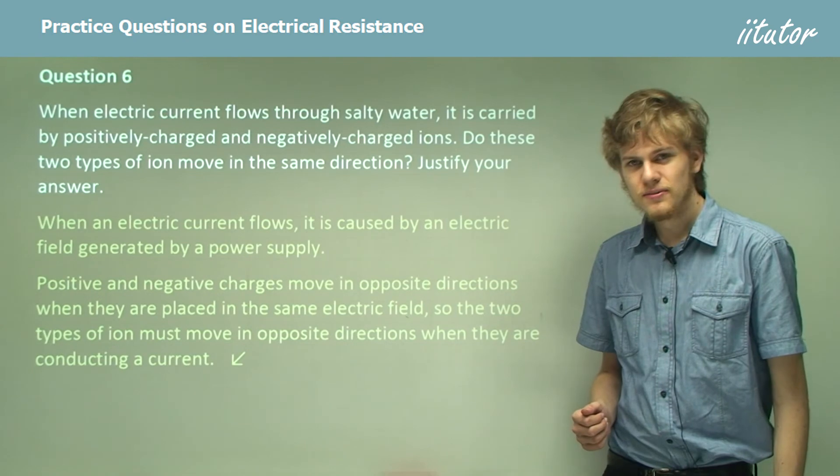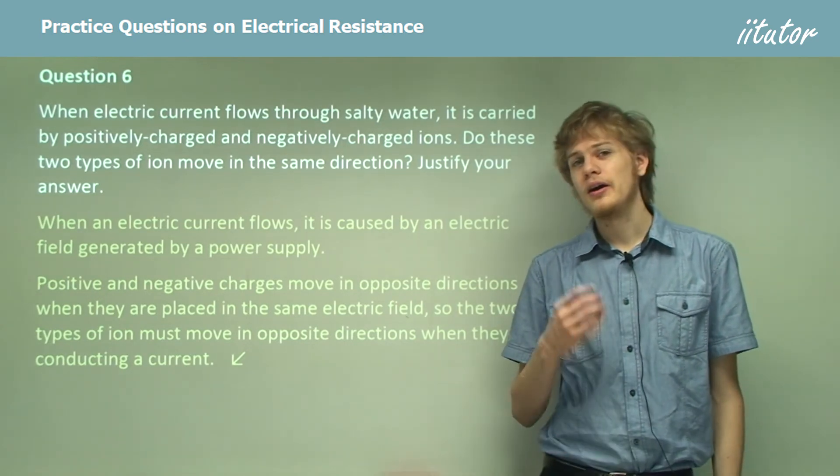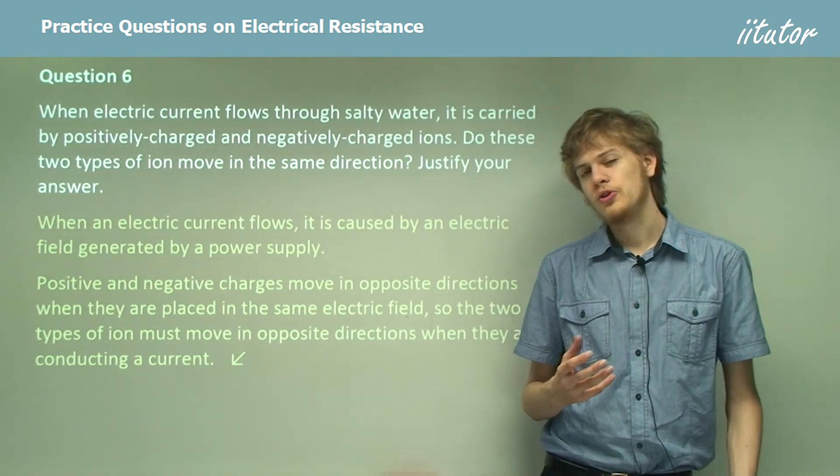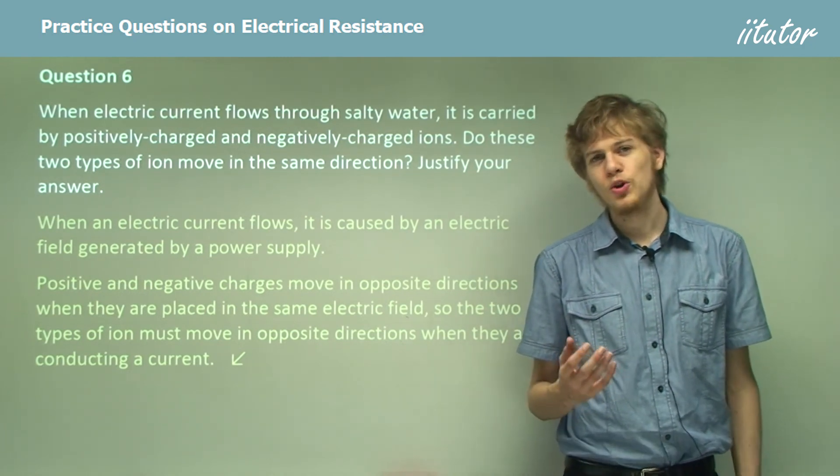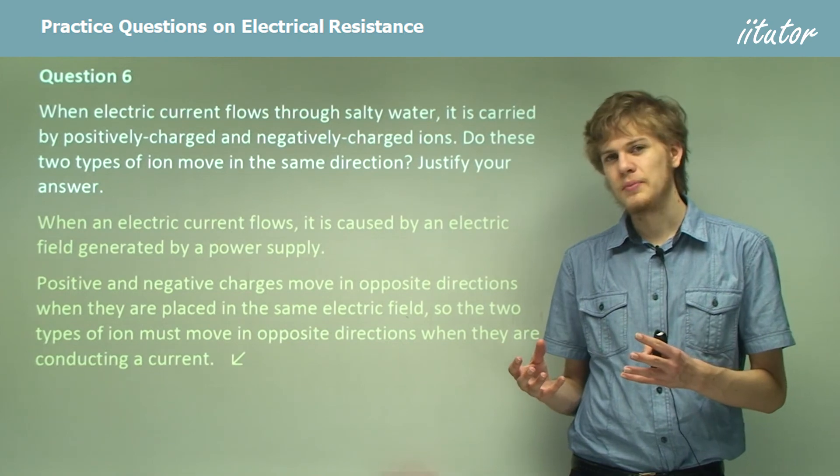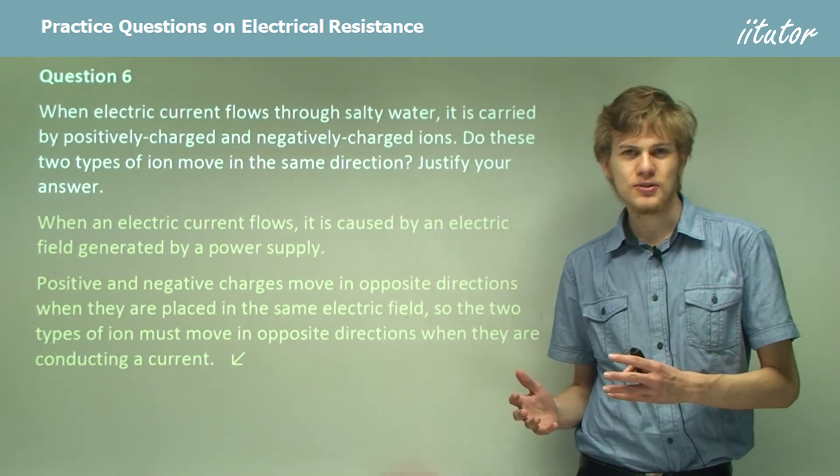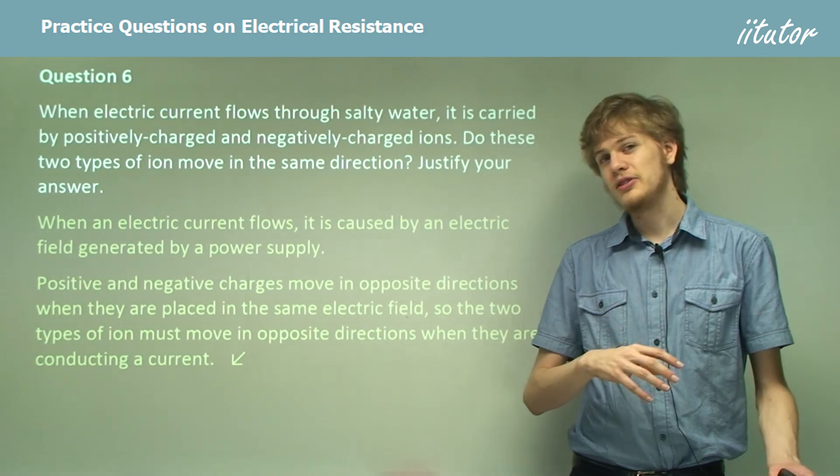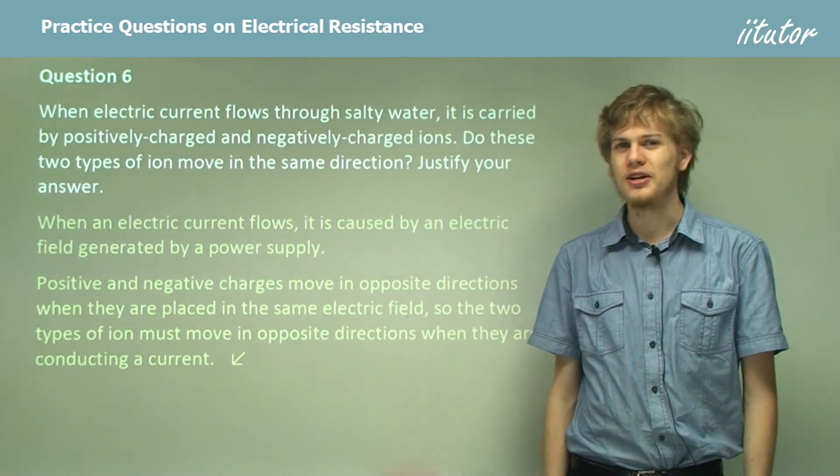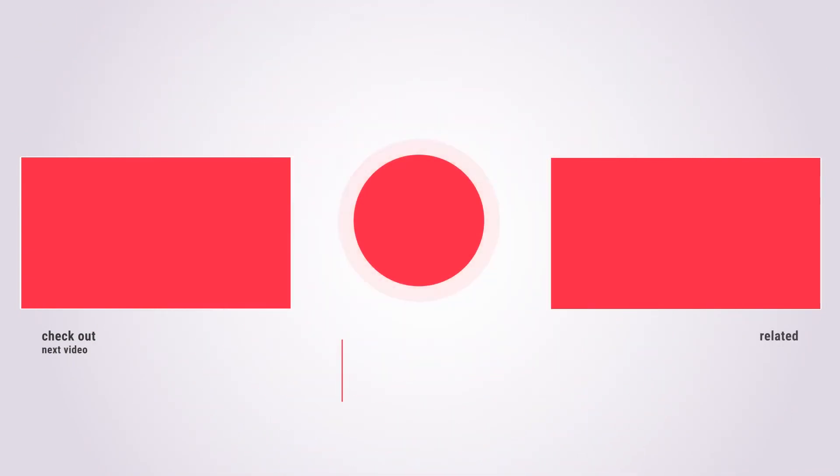So that's the end of the questions. In this section, we've learned about electric current. We've learned about the charge carriers that carry electric current in various different conductors. And we've learned about what sort of numbers we might expect to see in various electrical circuits. Now, these numbers can be quite helpful. If you get a number that seems quite off, don't forget to check your working out. We'll see you next time. Bye.